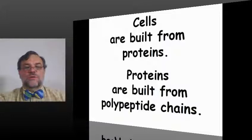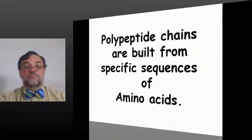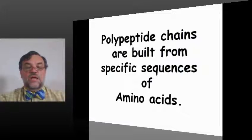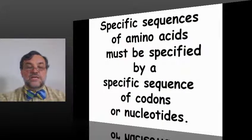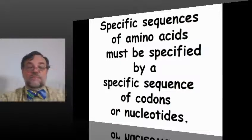To review: cells are built from proteins, proteins are built from polypeptide chains, polypeptide chains are built from specific sequences of amino acids. Specific sequences of amino acids must be specified by a specific sequence of codons or nucleotides.